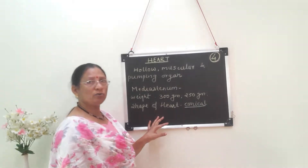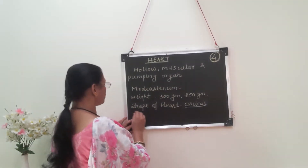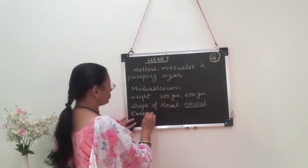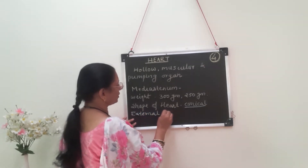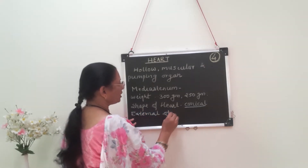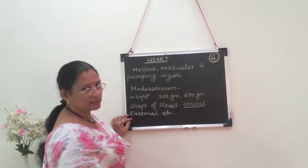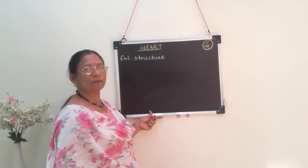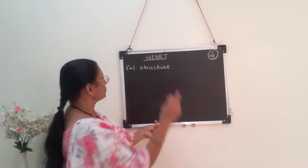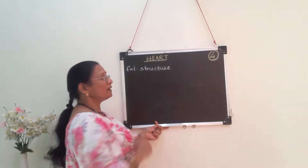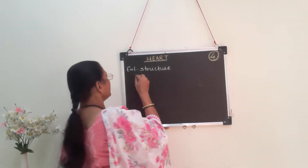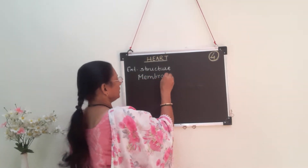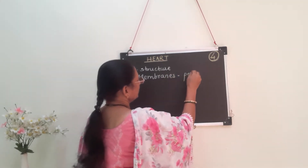Now we have to study about the external structure of the heart. Under external structure, we study about its coverings. Externally, the heart is covered by membranes, and the membranes which cover the heart are called the pericardium.